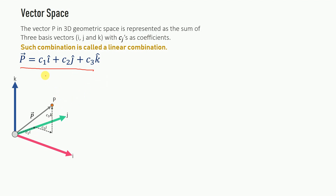The coefficients c1, c2, c3 represent the length along each particular direction — c1 along i, c2 along j, and so on. The coefficients determine the amount by which you move in each particular direction, and the combination of those steps gives you the position of the point in 3D space.